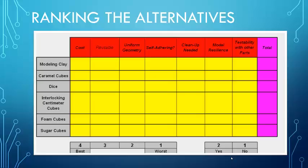And then along the top, we have our actual criteria we want to look at. We have cost, the reusability, the uniformity of the geometry, whether it's self-adhering or not. If there's cleanup needed, the resilience of the model and the testability with other parts. And then we have a total section.